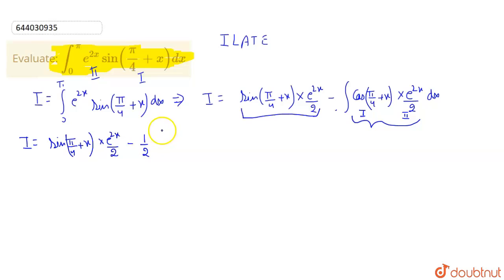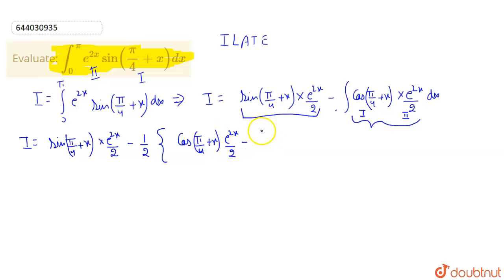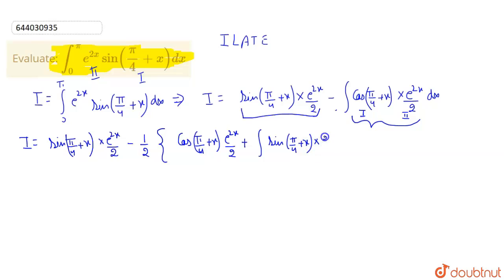We are left with the integration of the first term multiplied by the integration of the second, that is e^(2x)/2, minus the integral of the derivative of the first term times e^(2x)/2, minus the integral of the second term, e^(2x)/2 dx.